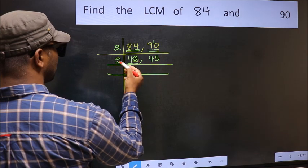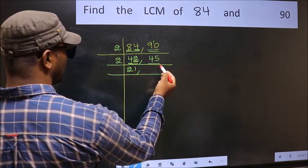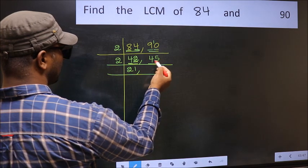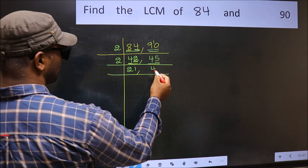The other number 2. When do we get 2 in 2 table? 2 1s 2. Now the other number 45. Last digit 5 not even so this is not divisible by 2. So you write it down as it is.